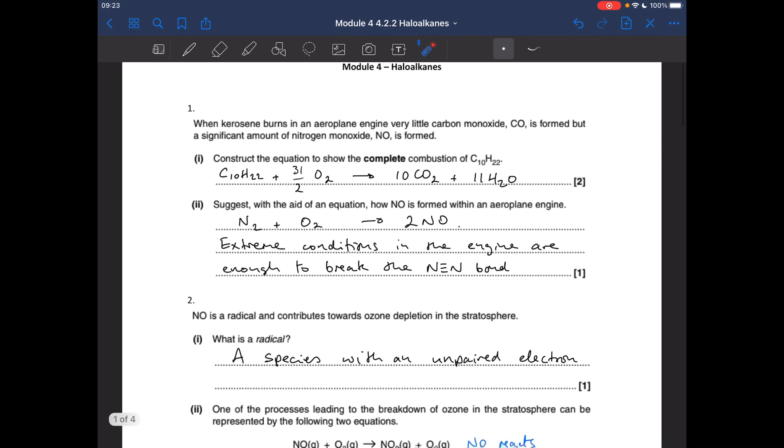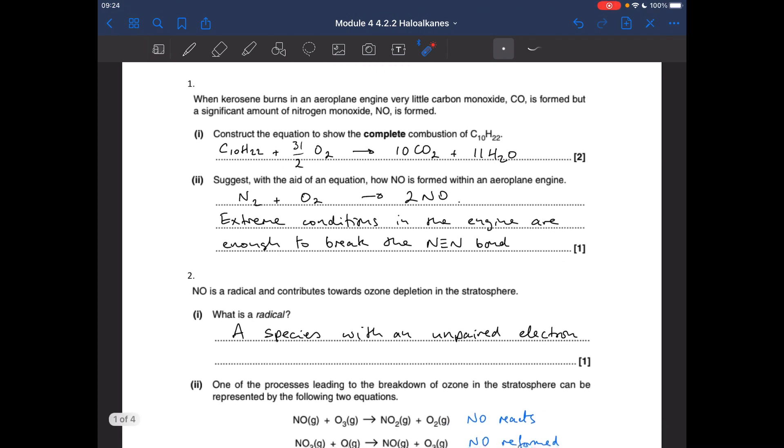So just write an equation showing how NO is formed in an aeroplane engine. Nitrogen makes up four-fifths of the air, reacts with oxygen, and it forms two moles of nitrogen monoxide. The extreme conditions in the engine provide enough energy to break the N-N triple bond.